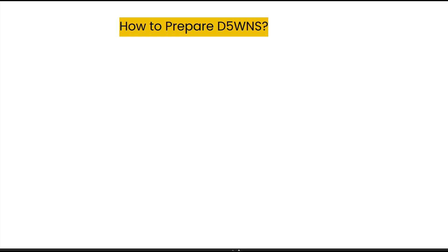Hey everyone, welcome to Capsa. Today we are going to learn how to prepare D5WNS, also known as dextrose 5% in 0.9% NaCl or sodium chloride. Let's dive in.